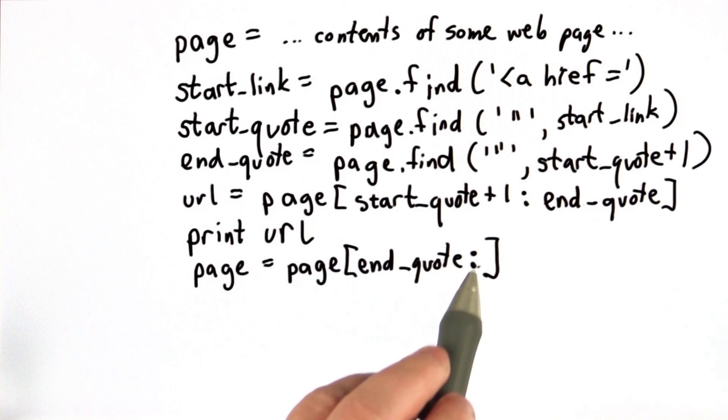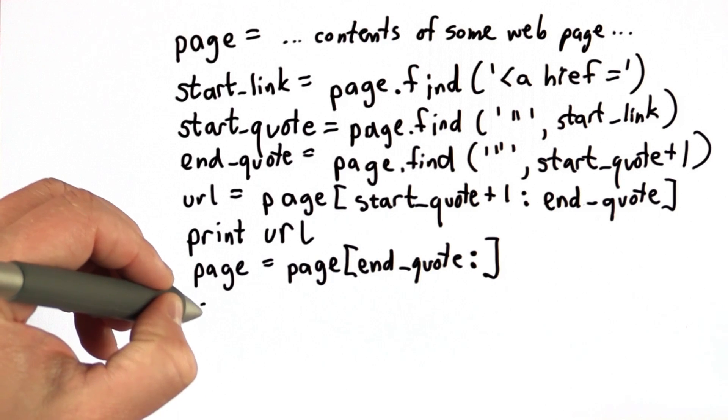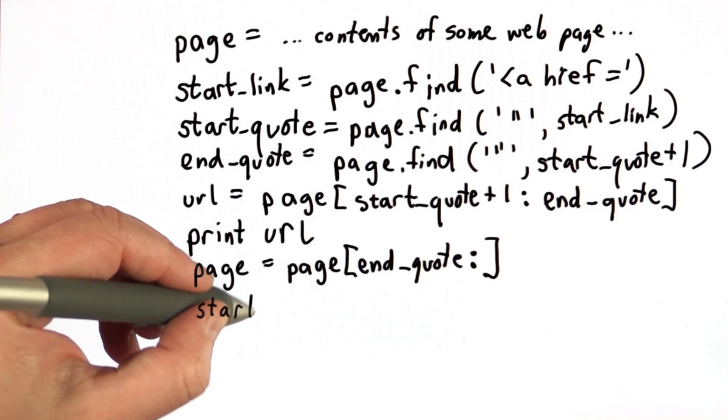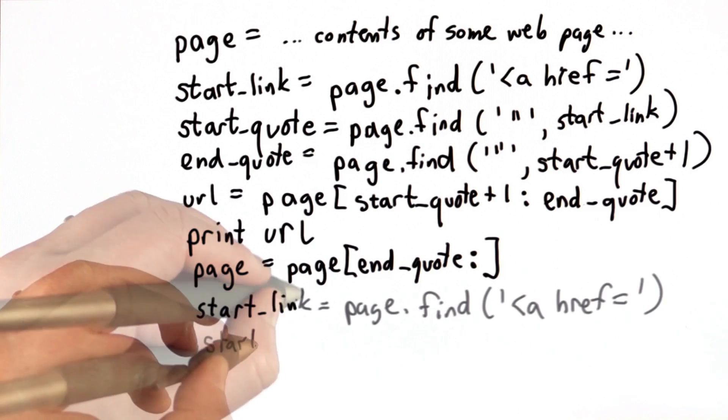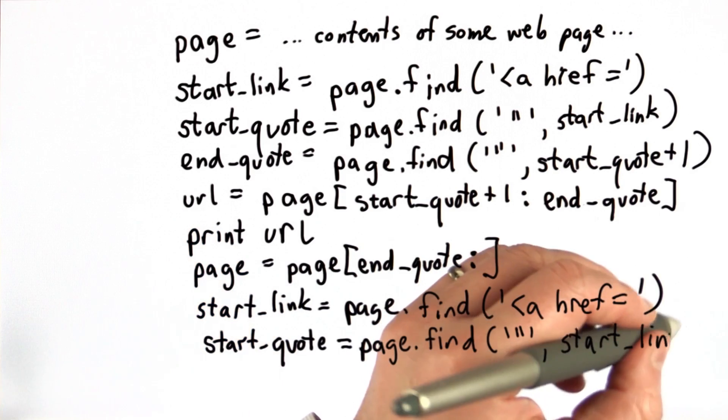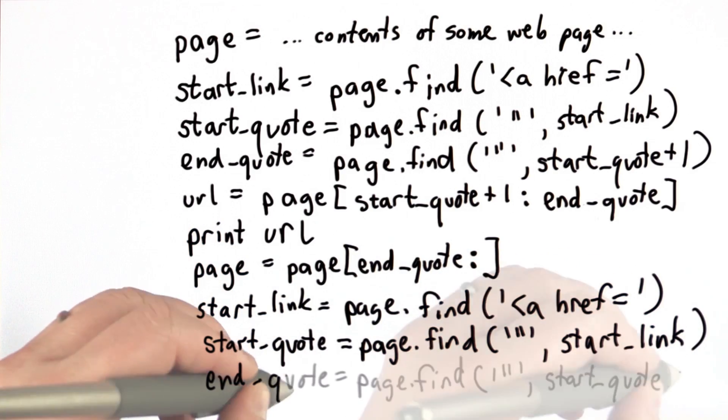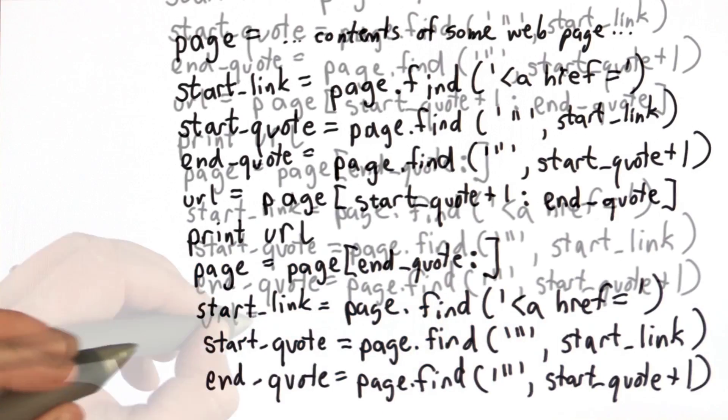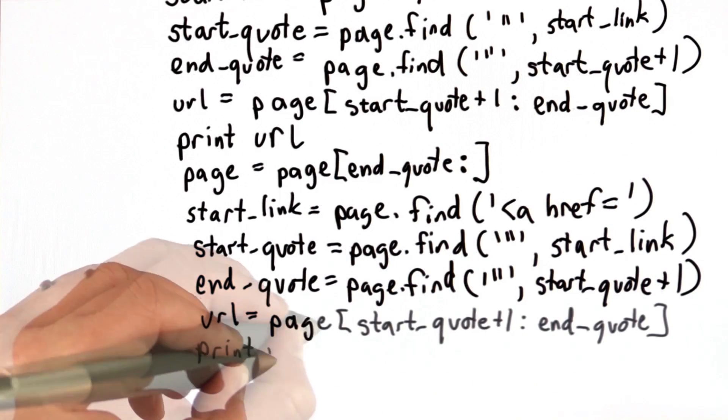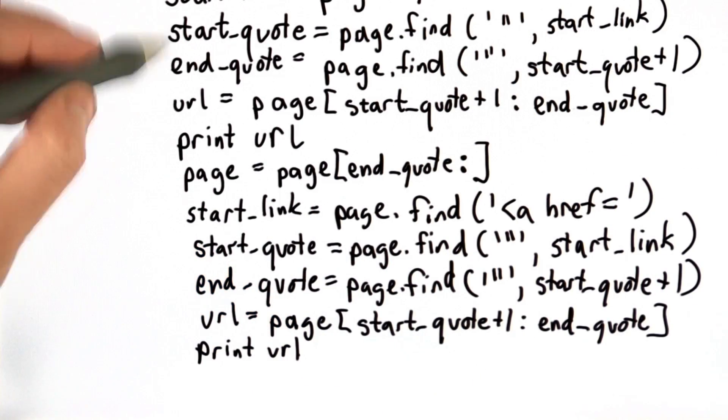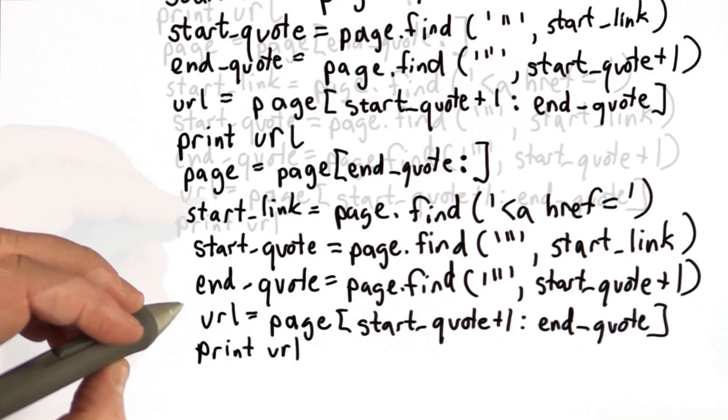And remember, when there's a blank after the colon, that means select from this position to the very end. And then we could do all the same stuff. So we'll do start link again. We'll do start quote again. So now we've got code that's going to print out the first URL. Keep going, updating the variable page, and then doing the exact same thing, printing out the second URL.